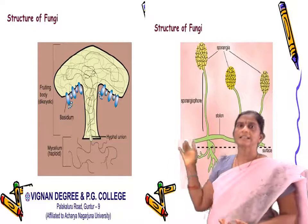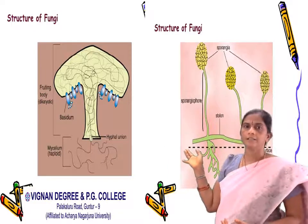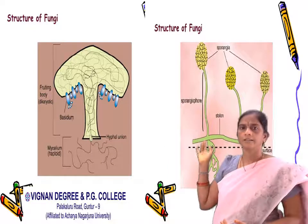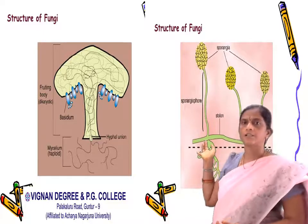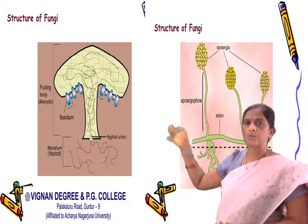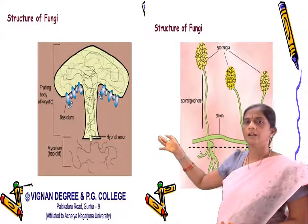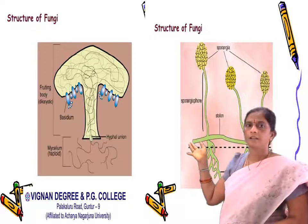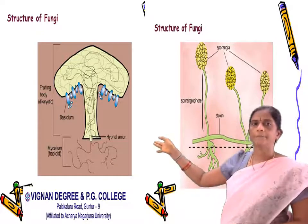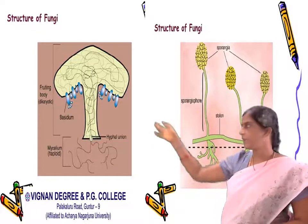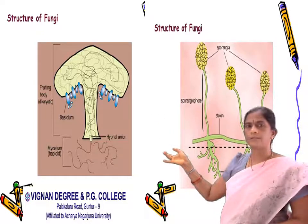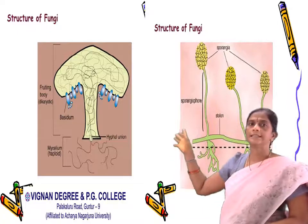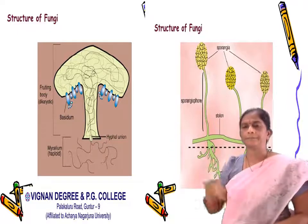Here you can see the structure of fungi — this is Rhizopus. You can see the spores, sporangia, rhizoids, stolons, vegetative part, fruiting body, mycelium, and hyphae. This is the structure of fungi.